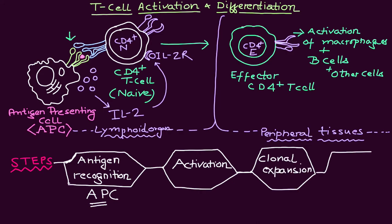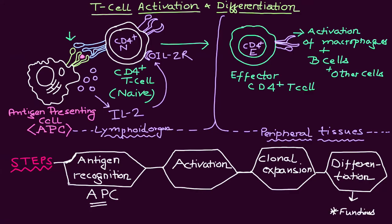The third stage is clonal expansion, which we will discuss in more detail in later videos. The final stage is differentiation, where you will have effector cells that activate macrophages, T cells, and B cells. You will also have memory cells that help the body remember that particular pathogen.